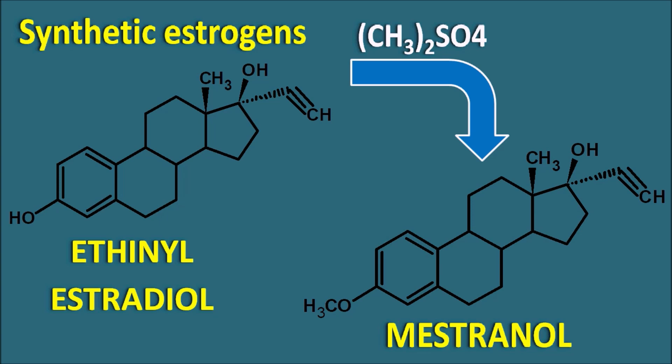In summary, the biosynthesis of estrogens proceeds from pregnenolone, just like androgens, but the enzyme aromatase specifically prepares estrogens by introducing additional double bonds to the first ring, making it aromatic. In chemical synthesis, Marker degradation is used with androstadienedione as the key intermediate that is converted into estrone. Today, fermentation using Mycobacterium sp. can directly yield androstadienedione from cholesterol or sitosterol, which is then converted into estrone, ethinyl estradiol, and mestranol.